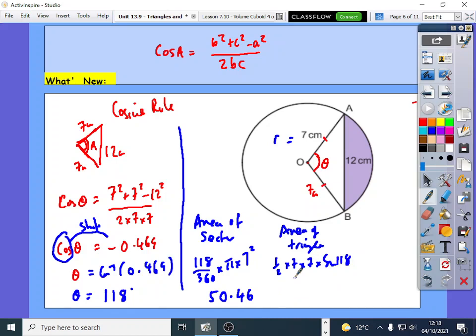So here you're going to get 0.5 times 49 times sine 118, and you'll get 21.63.